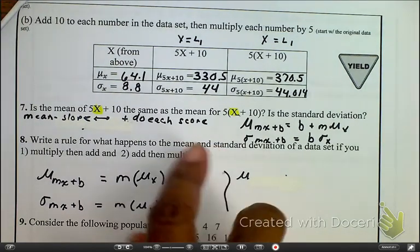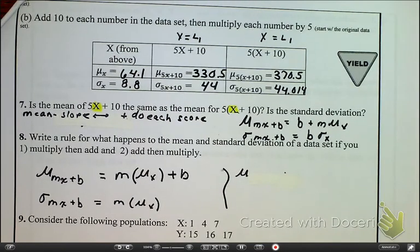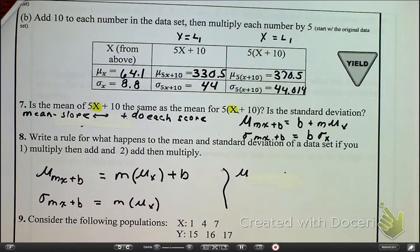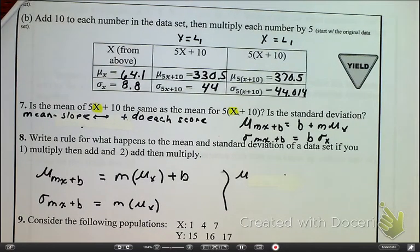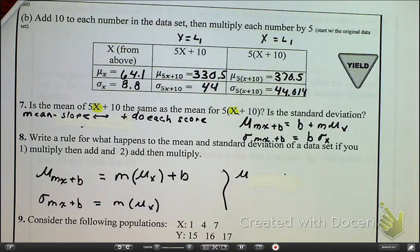So the difference between these two right here are as follows. The means change in the same way, but the standard deviation changes by its multiplier. And remember, we've talked about this, but adding or subtracting an amount to each of the values does not change the standard deviation.